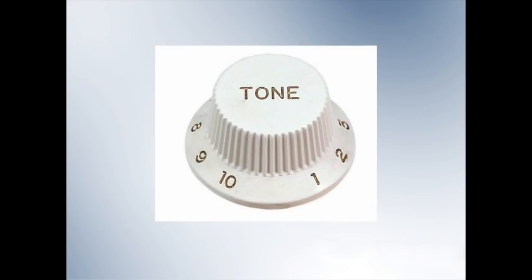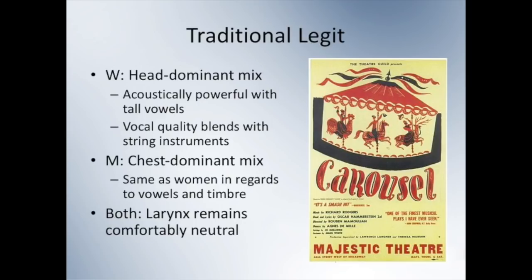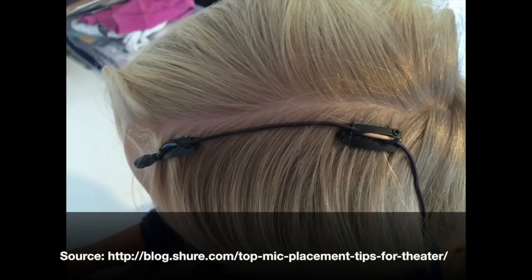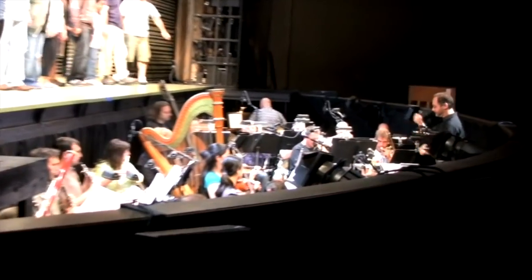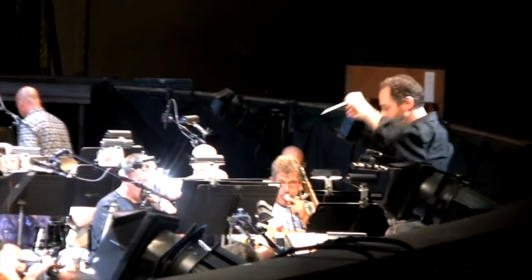We are going to begin by talking about tone. In traditional legit songs, the women are going to primarily be singing in more of a head-dominant mix. These are songs such as If I Loved You, which were written in a time when microphones were not being used on the musical theater stage. In any contemporary production the student would be wearing a microphone, but not at the corner of their mouth — rather up on their forehead or in their hairline — to pick up more of the natural acoustic beauty of the voice. The vocal quality is going to blend with the string instruments in the orchestra. Men are also blending with the string orchestra, singing in more of a chest-dominant mix, something akin to operetta, and acoustically projecting their voices as well.